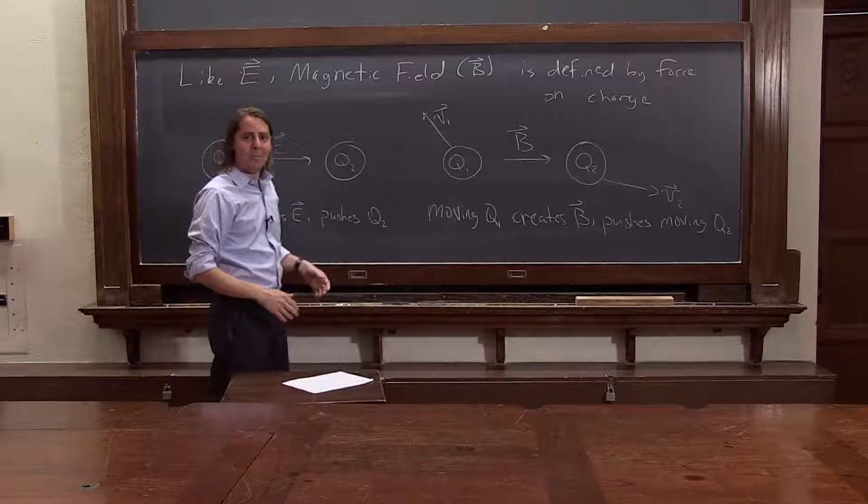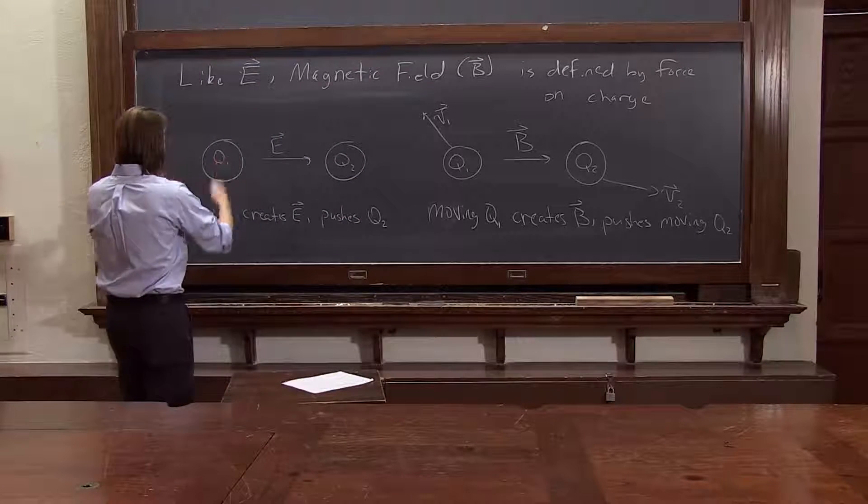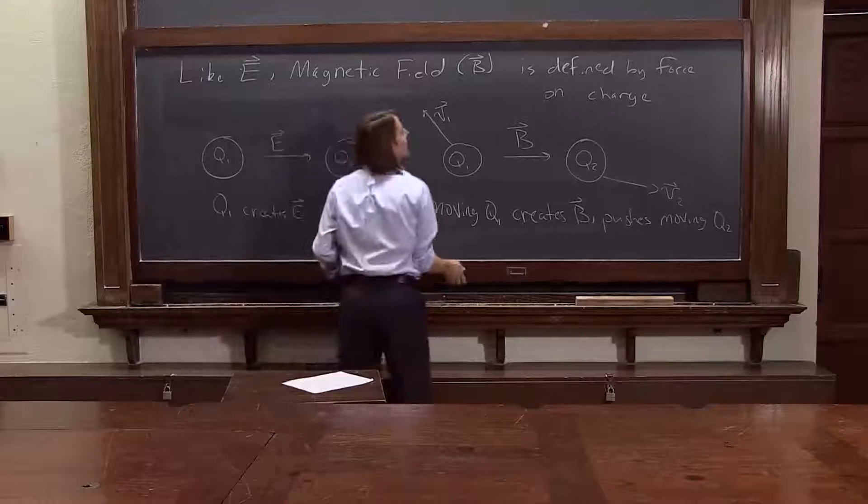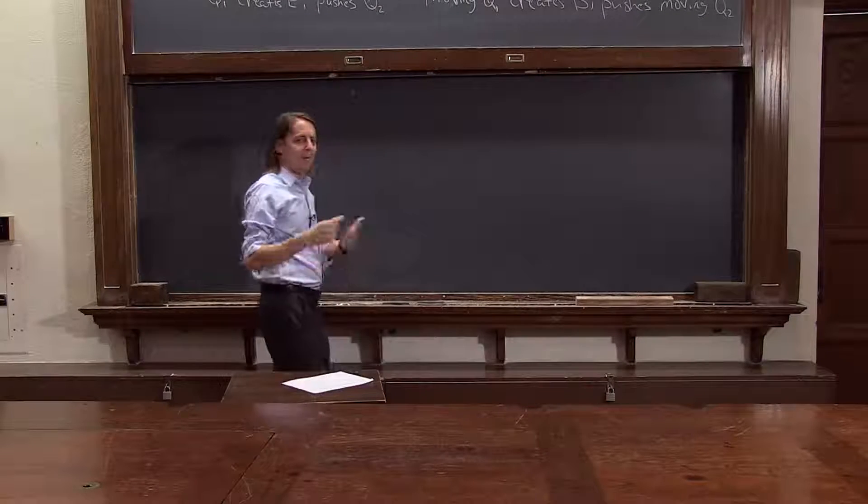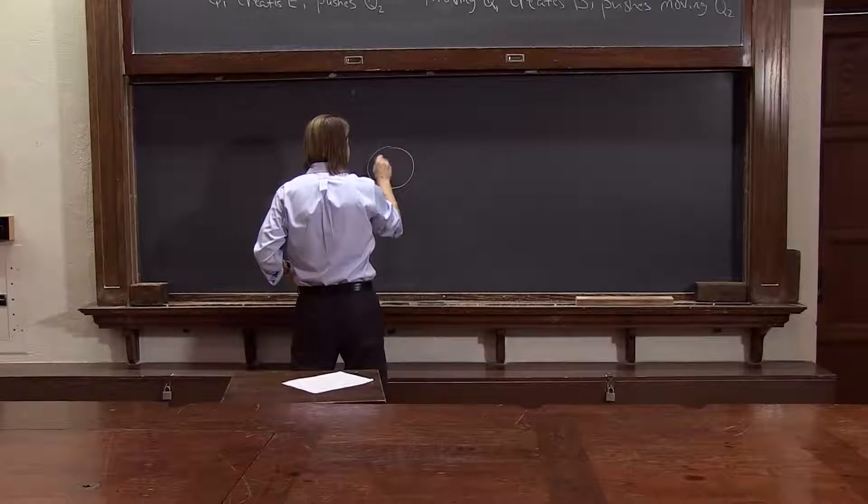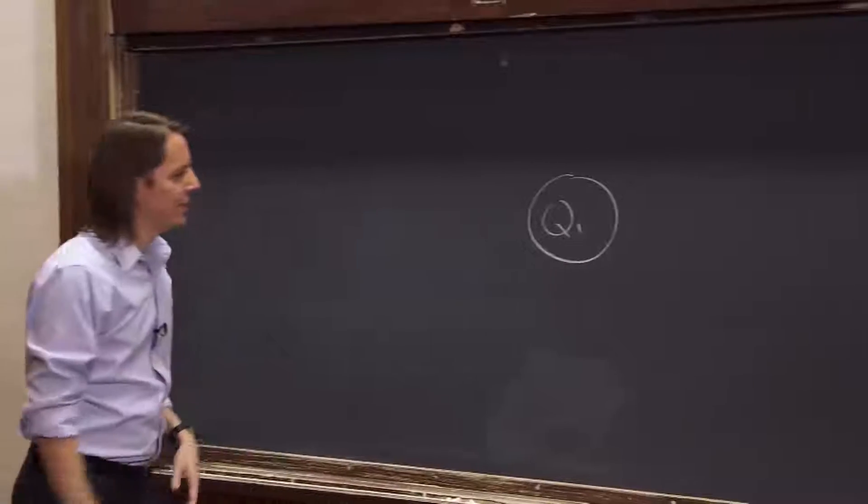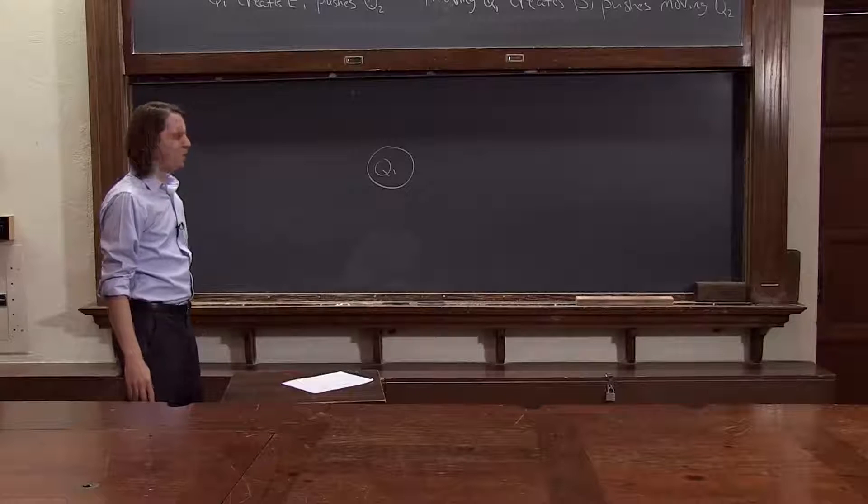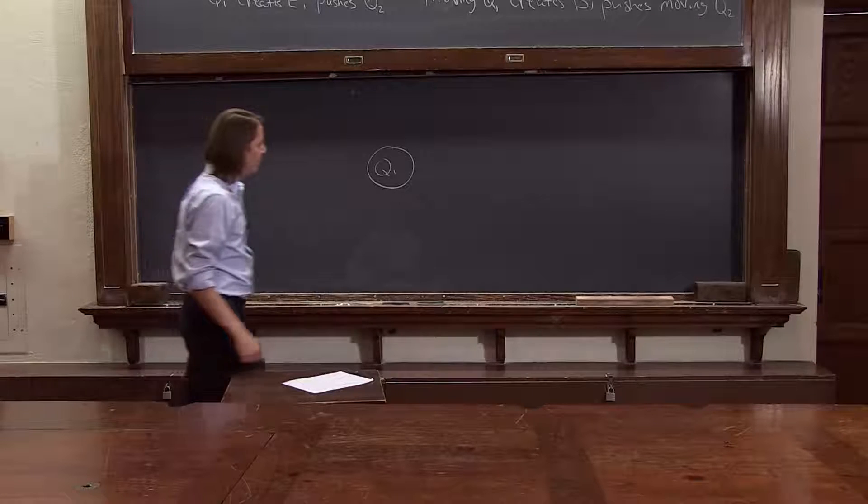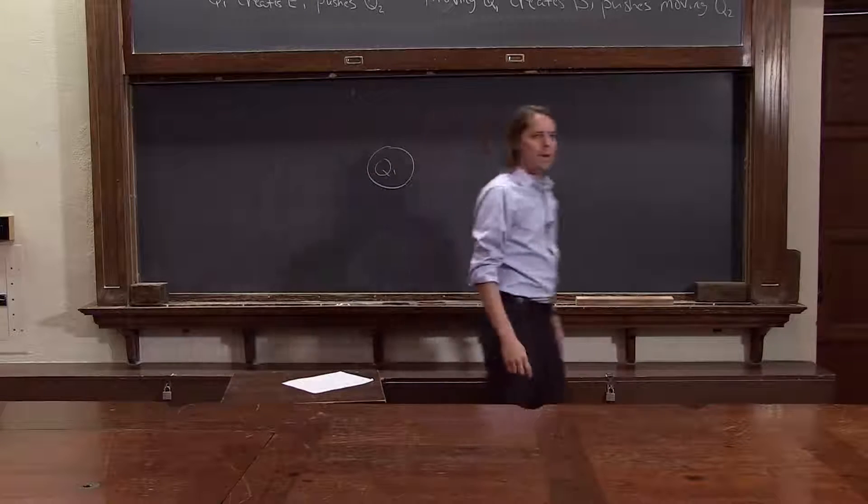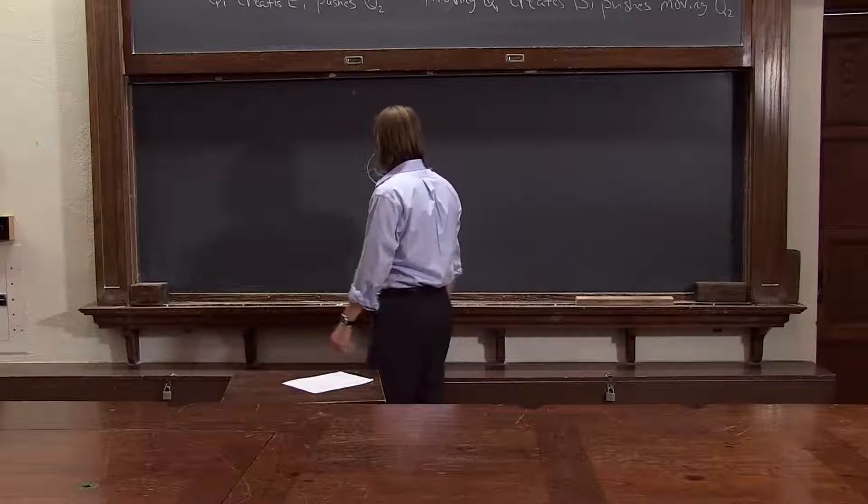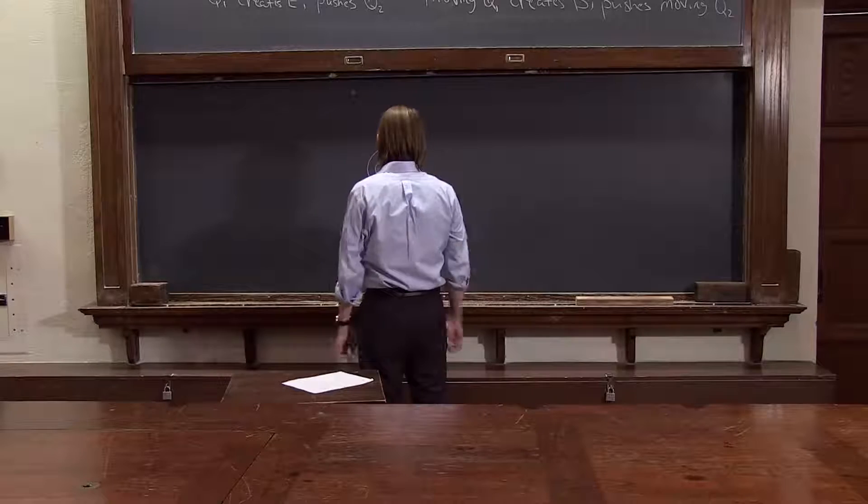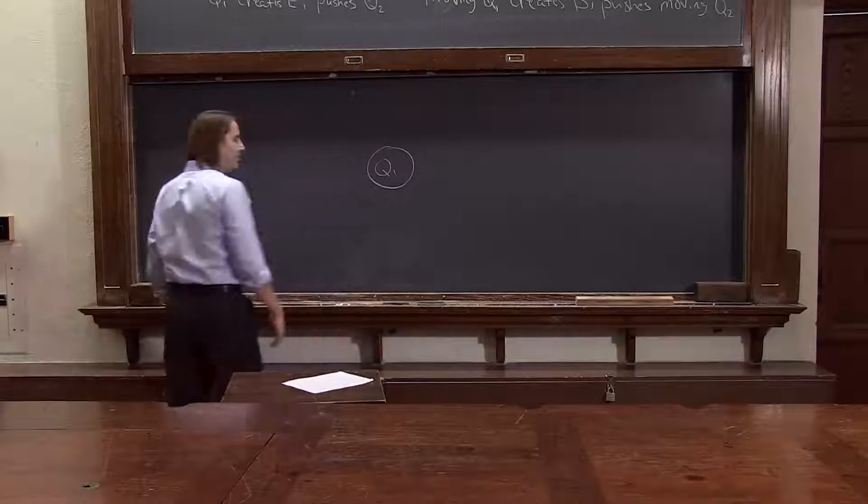This is what bothered him. If here is a charge, if Q1 is sitting there and I'm standing here and I look at it, I see an electric field. And now if I start moving, now Q1 is moving relative to me, so suddenly I see a magnetic field. And then I stop, oh no, it's just an electric field. And then I start moving again and I see a magnetic field.